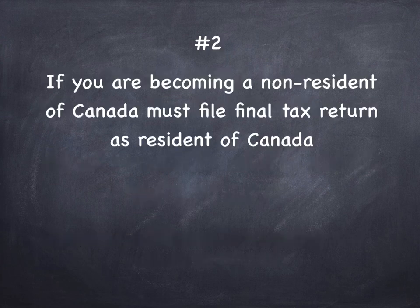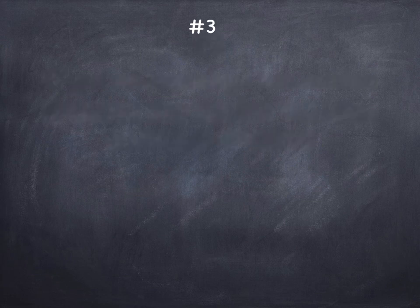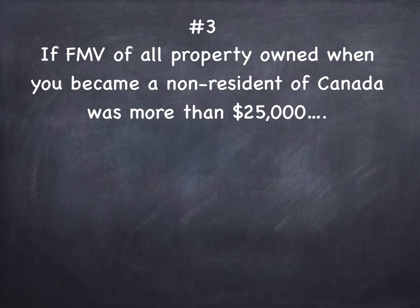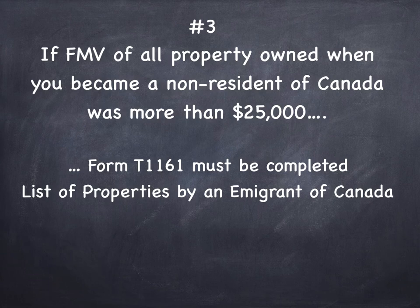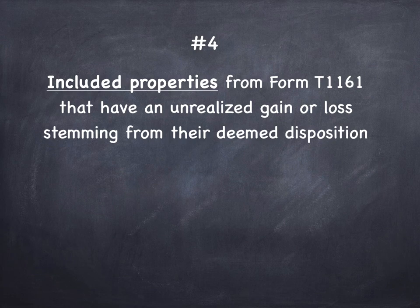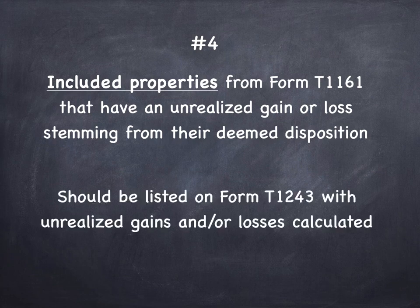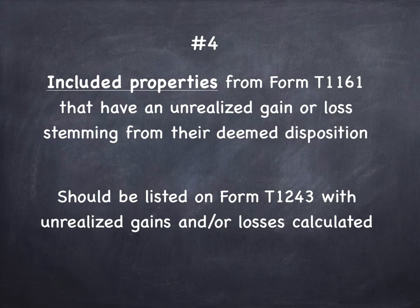Number two: if you're becoming a non-resident of Canada, you must file that final tax return as a resident of Canada — that's where most of these forms and elections are filed. Number three: if the fair market value of all the property you own when you became a non-resident exceeds $25,000, you need to fill out Form T-1161, a list of properties by an emigrant of Canada. That is not discretionary — it's an obligation. The included properties from T-1161 that have an unrealized gain or loss from the deemed disposition must also be submitted on Form T-1243 with a calculation of the unrealized gains or losses for each property.